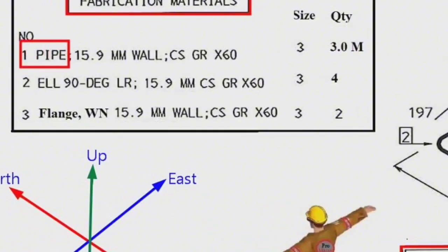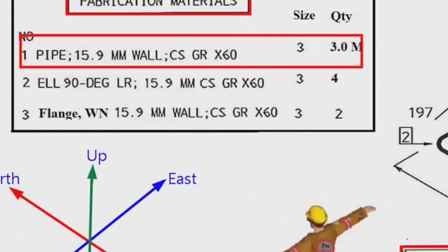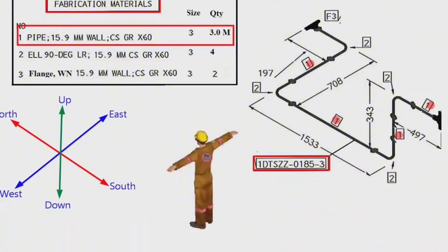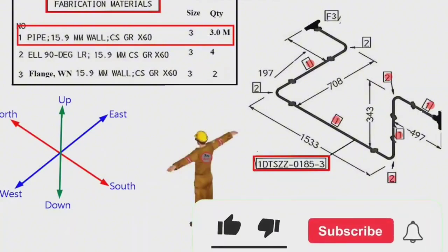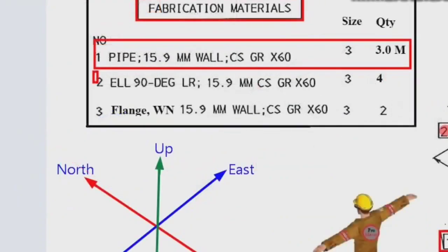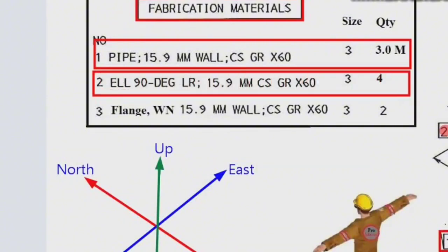Detail number 1: pipe, wall thickness is 15.9 mm, carbon steel, grade is X60, size of pipe is 3 inches, length 3 meters used. Detail number 2 was used in 4 places in the pipe drawing. Detail number 2: elbow, 90 degree, long radius, wall thickness is 15.9 mm, carbon steel, grade is X60, elbow size is 3 inches, quantity is 4 pieces.